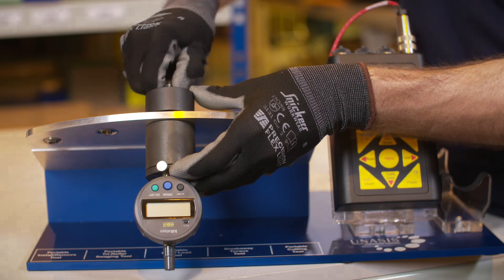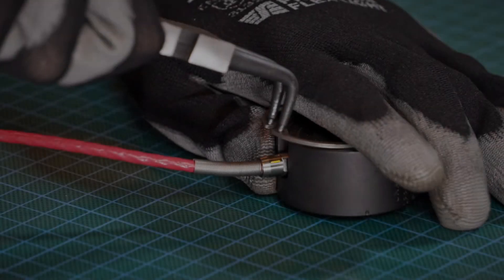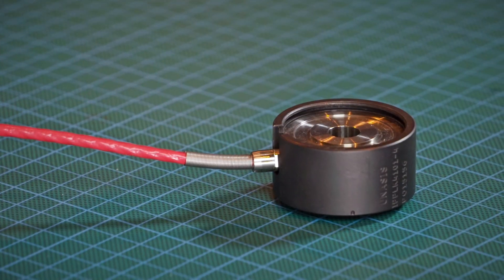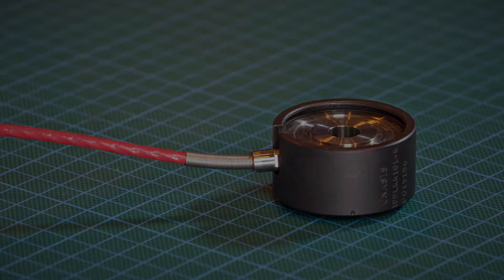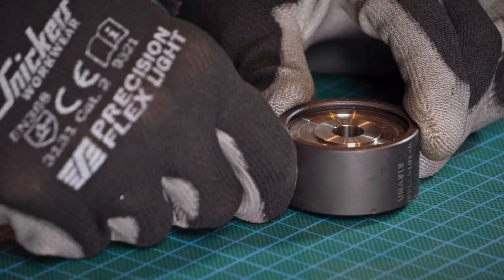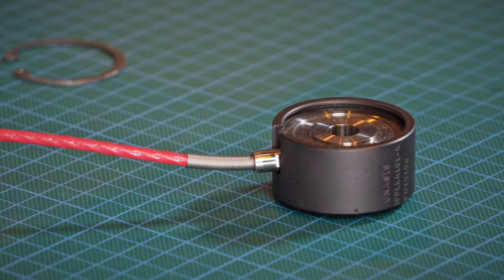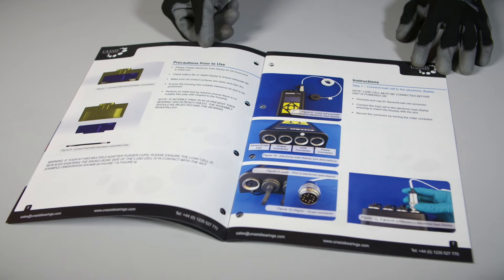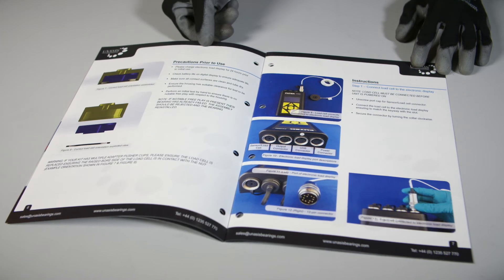If you need to modify the tool for use with a different bearing size, simply remove the circlip with circlip pliers. Be careful when installing the load cell again. The raised bore of the load cell must be in contact with the nut. Please consult the instruction manual for a visual representation.